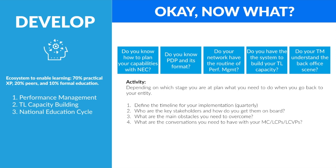What are the main obstacles you need to overcome? In many entities, the develop phase is one of the phases of the TM process with the lowest percent implementation — so really ask yourself why that is. Make a list and an action plan for the conversations you need to have with your MC, your LCPs, your LCDPs. Determine what conversations need to be facilitated by you as MCP and what needs to be facilitated by others, perhaps your MCBTM.